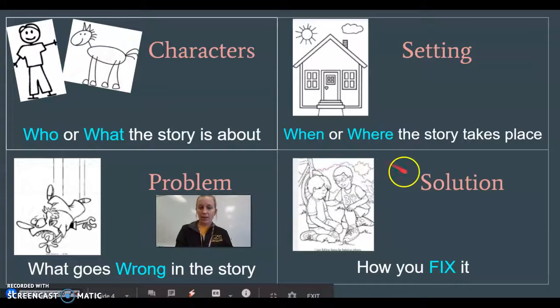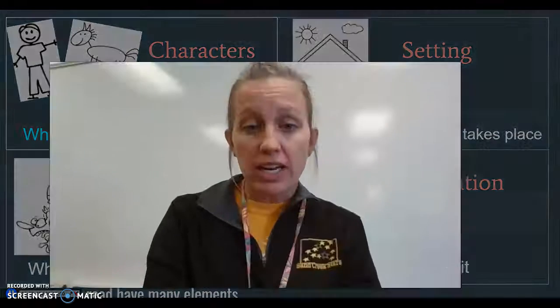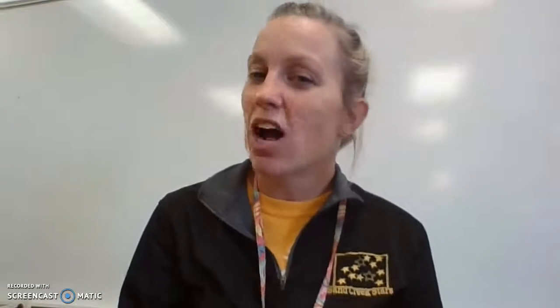Now we have our solution. The solution is how you fix that problem. Do you see where someone is helping a friend to make them feel better? Solution is a way that you fix a problem. We say: solution is how we fix it — and we take our arms and fix it. I like that because it's almost like our little happy dance in the story because the problem is finally solved. Let's try all of our motions together: characters are who or what, the setting is when or where, the problem is when something goes wrong, the solution is how we fix it.